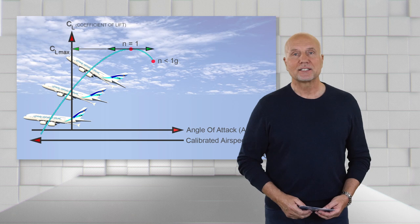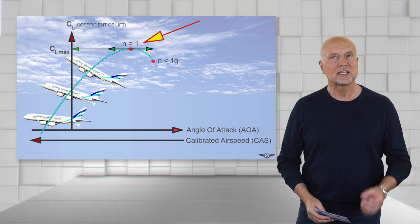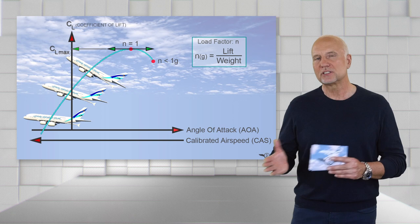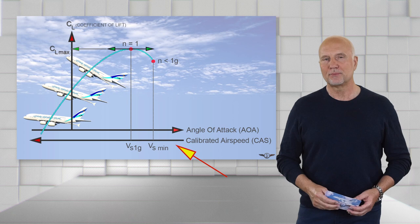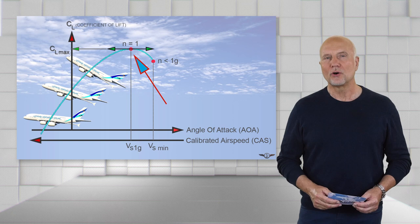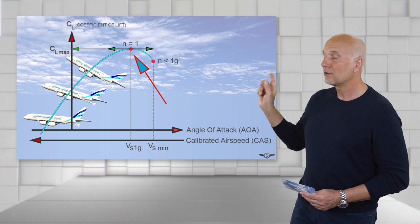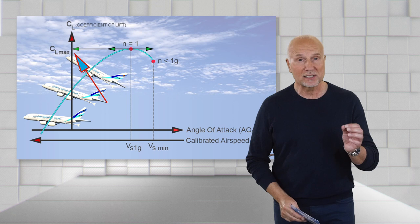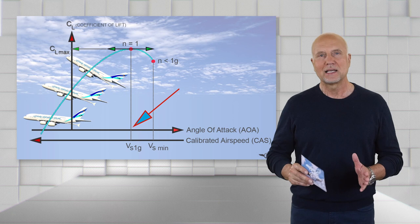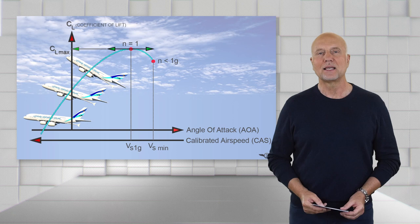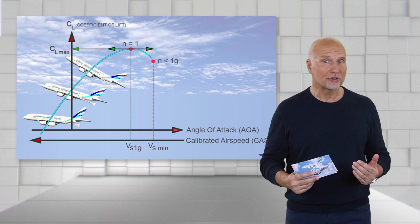Let's have a look at the dynamic lift. CL is the coefficient of lift. N is the load factor expressed in G. A quick reminder, G equals lift divided by weight. V stands for velocity, in our case calibrated airspeed. Depending on the shape of the airfoil, the highest point on the curve illustrates a specific calibrated airspeed where the coefficient of lift reaches its peak, labeled CL max. This is also dependent on a specific angle of attack. At this point, the aircraft is still able to maintain a load of 1G, and this speed is named VS 1G.